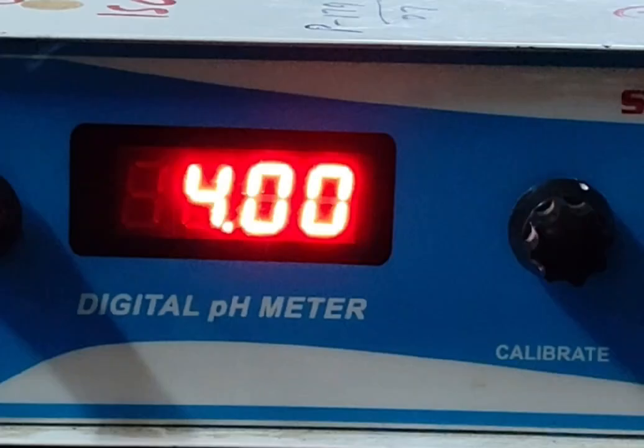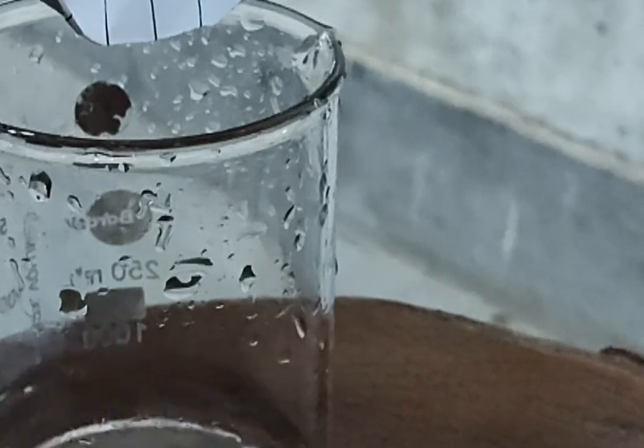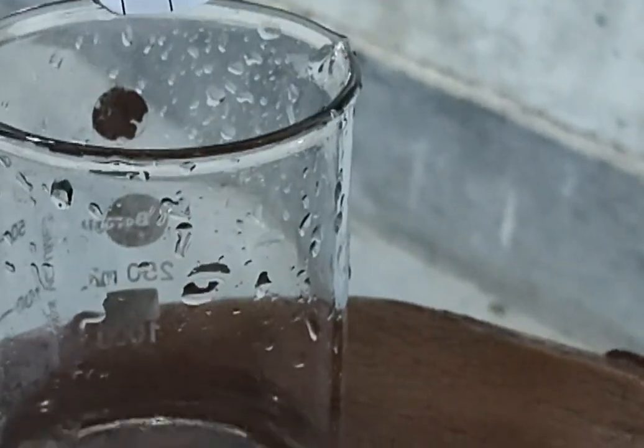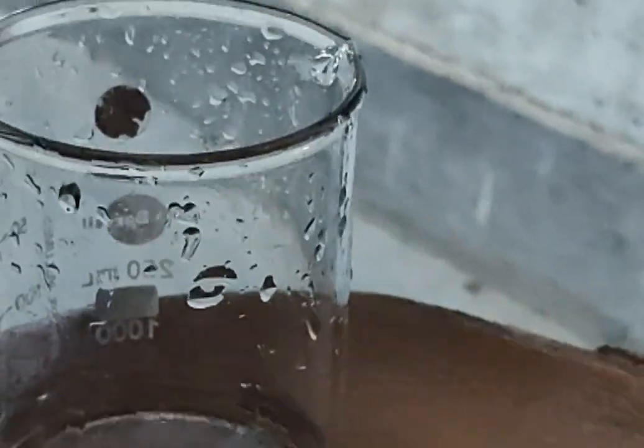Now after mixing, we have achieved our buffer solution of sodium acetate and acetic acid. Now we are using a pH meter. We are calculating its pH. The pH has come out to be 4.